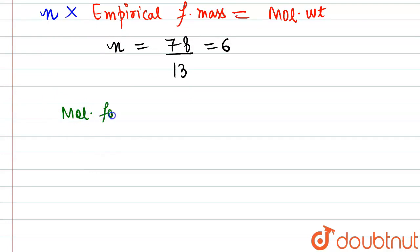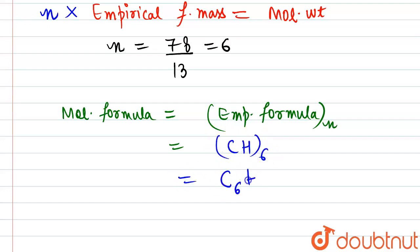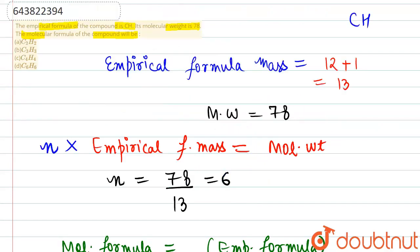Now we will be using the expression of molecular formula. Molecular formula is empirical formula taken n in the subscript. Empirical formula we have is CH, and n we calculated is 6, so molecular formula will be C6H6. Going above, marking option T as the answer. Thank you.